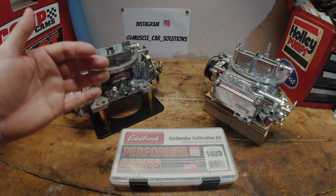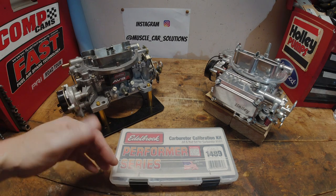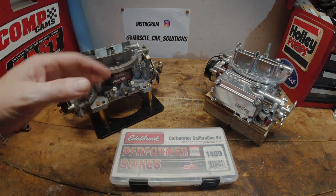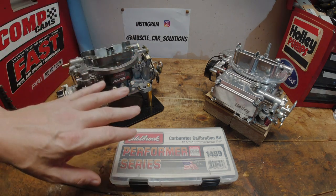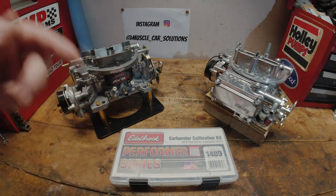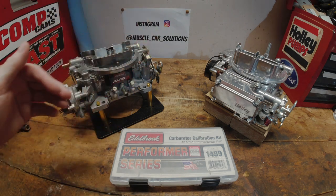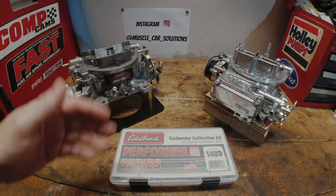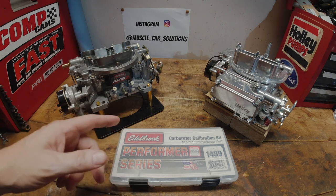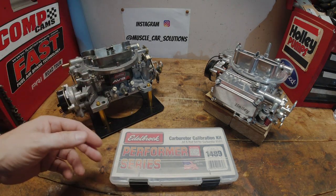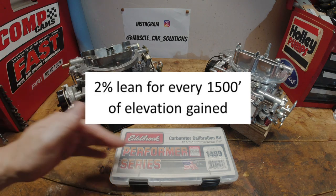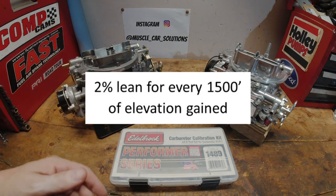When I say higher elevations, typically it's anything 3,000 foot and above. That's when you really need to start looking at making some changes to how you tune the carburetor because they don't need as much fuel. You're going to lean the carburetor out the higher you go in elevation. A typical rule of thumb for the Edelbrock carburetor is you'll go 2% lean for every 1,500 foot of elevation.